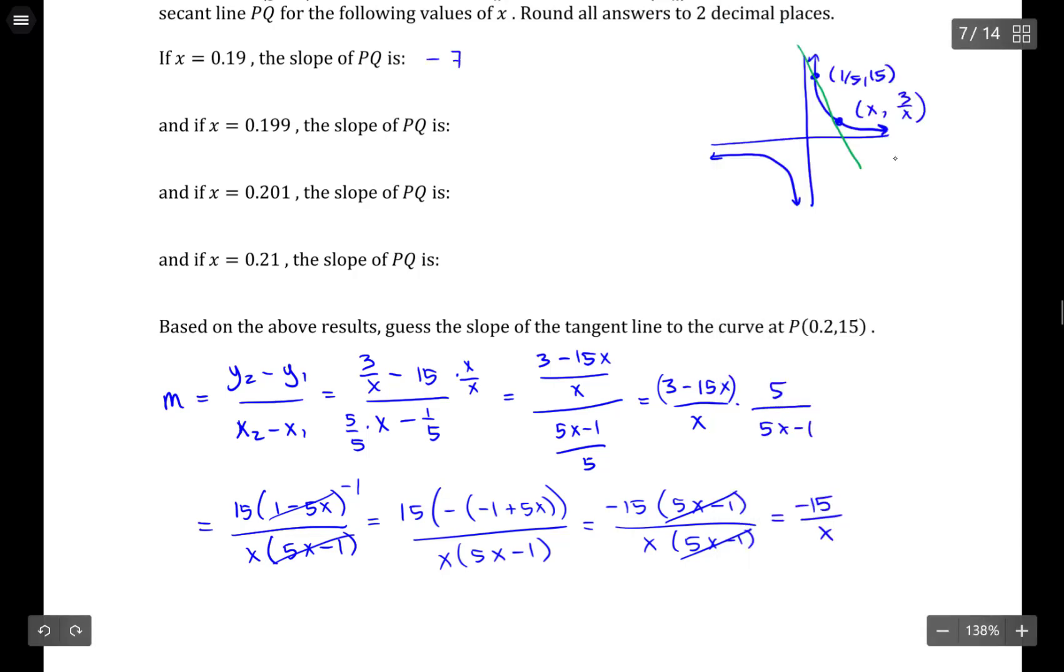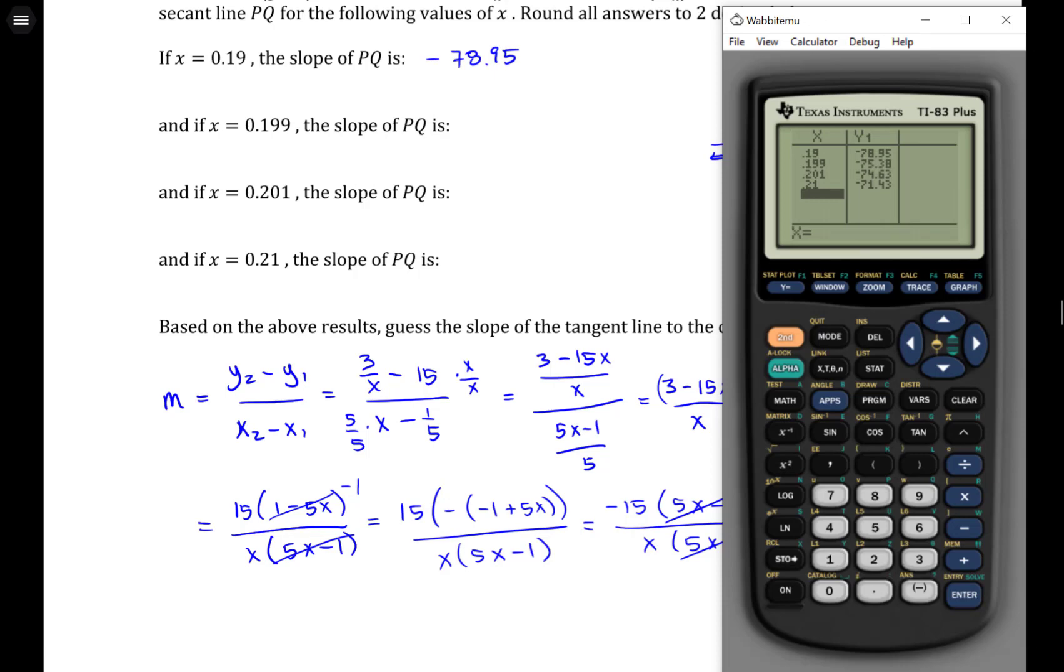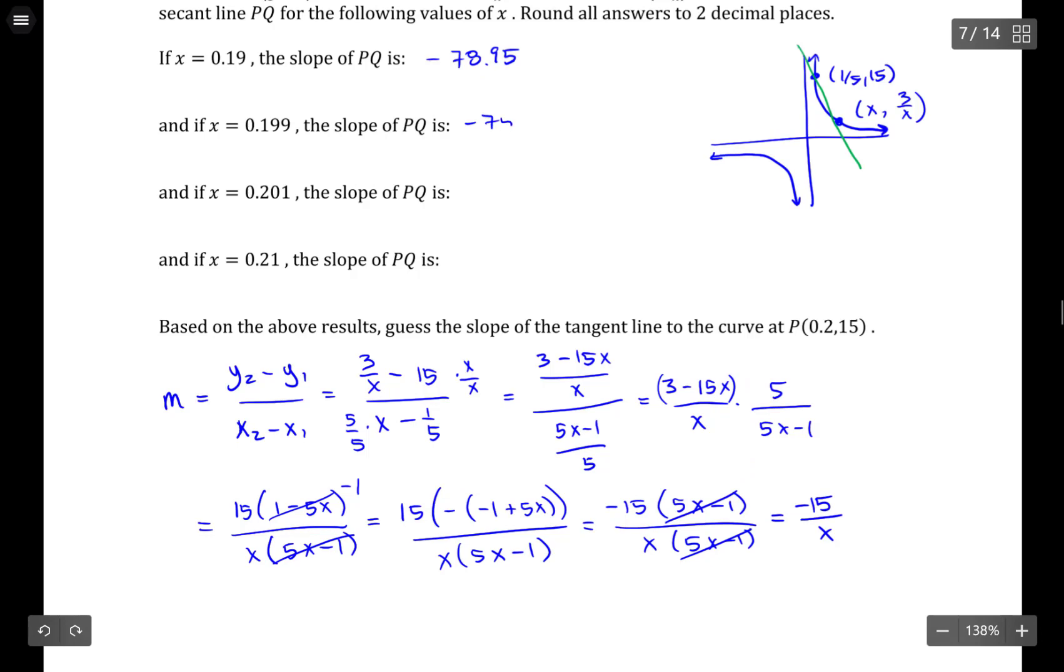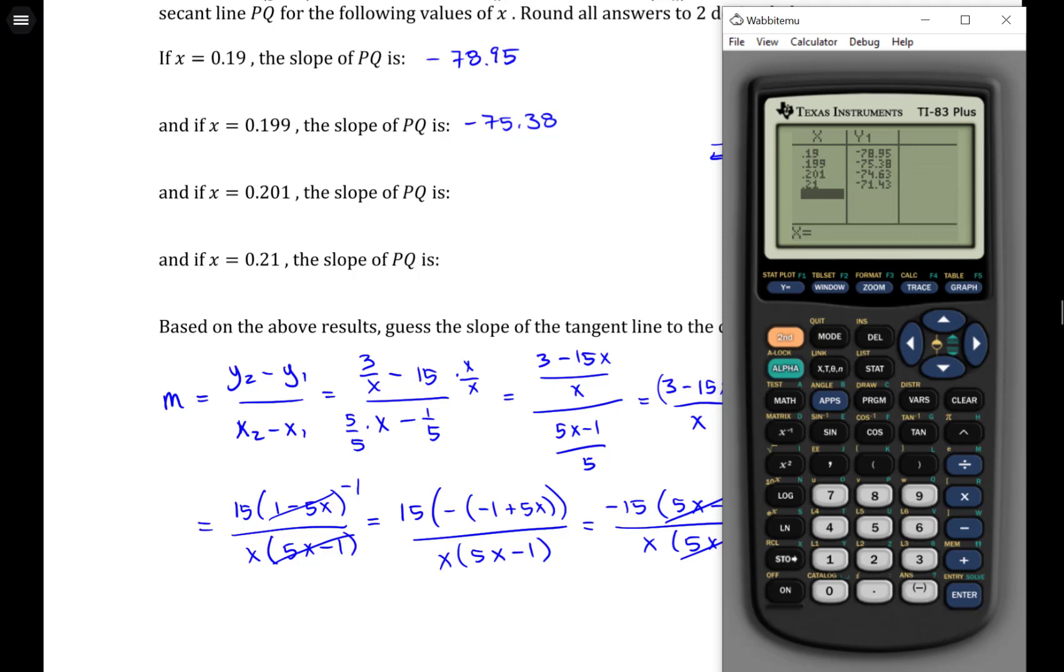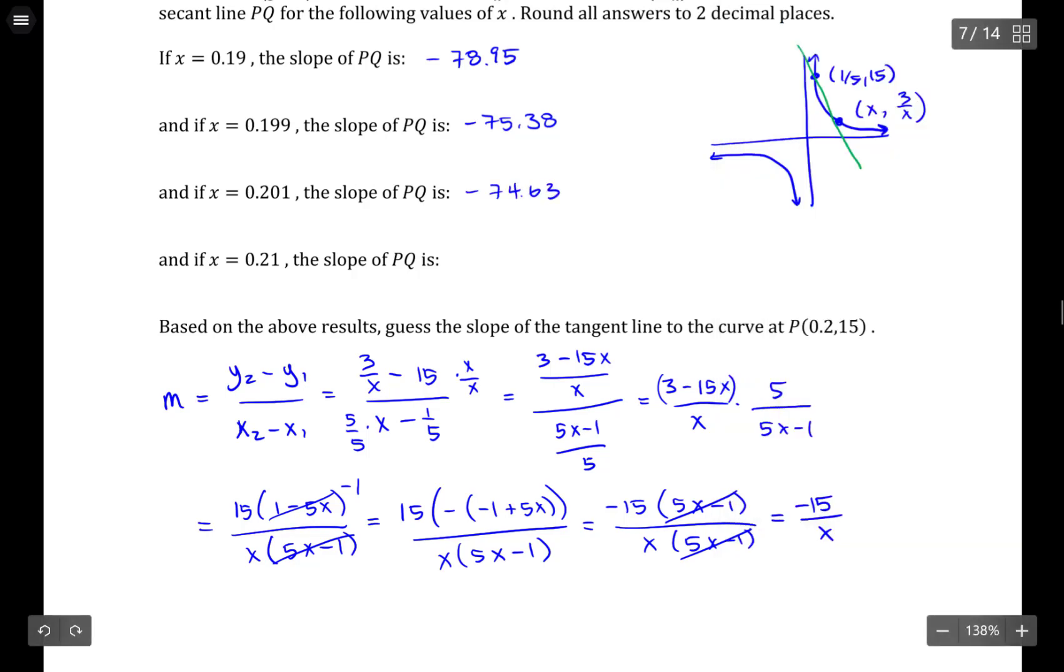So negative 78.95. Negative 75.38. Negative 74.63. And negative 71.43. So let's take a look at what's happening to this limit. Here I have values that are just smaller than one-fifth, because one-fifth is 0.2. But I'm getting closer and closer to 0.2, which is one-fifth. These values are getting smaller, but they look like they might be approaching, say, negative 75. And then if we go the other direction, so 0.21 and then 0.201, that's also getting closer to 0.2. And you can see here, these also look like they're approaching negative 75.